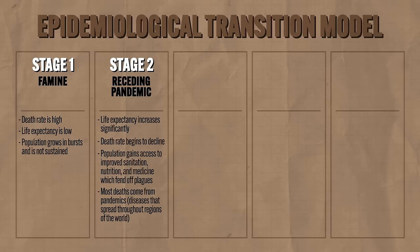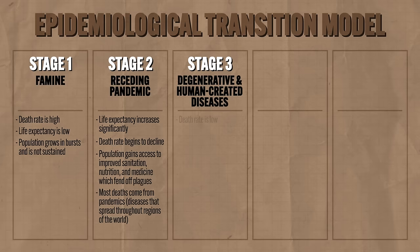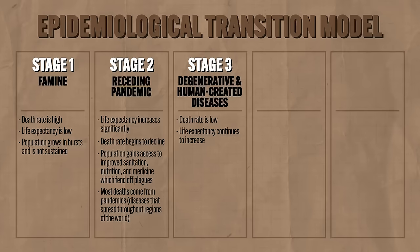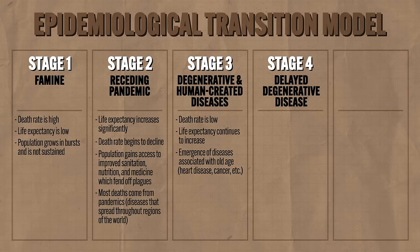Stage three is the degenerative and human-created diseases phase. The death rate is still low and life expectancy continues to increase, but longer life brings new problems — especially diseases associated with old age like heart disease and cancer. Stage four is the delayed degenerative disease phase, where life expectancy is at its highest. Medical technology advances significantly to address aging-related diseases: bypass surgery for heart disease, chemotherapy for cancer, and so on.